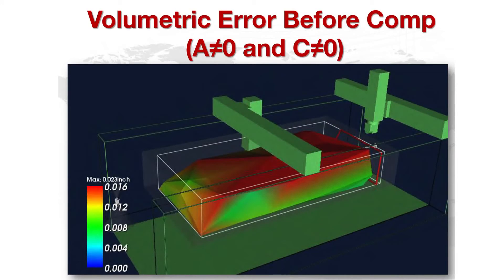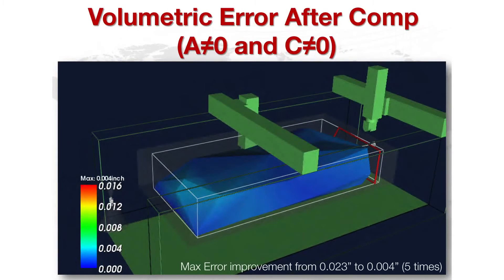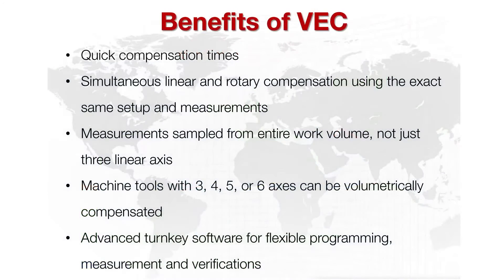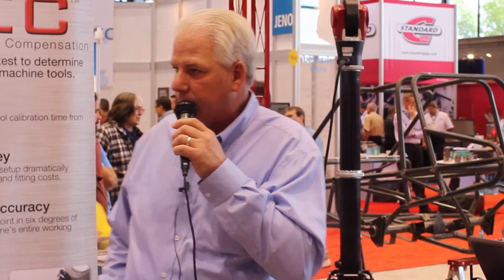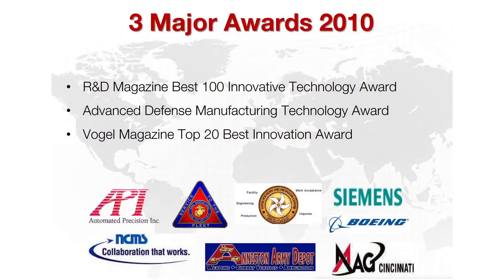Here we show a 3D error map of errors on a machine showing a 23-thousandths max error before calibration, reduced to 4 thousandths after calibration. Benefits of VEC include quick compensation times; we can simultaneously measure the rotaries and linears at the same time across up to six axes. We have a full turnkey software solution for generating programs and implementing compensation. API was awarded three awards in 2010 for VEC: the R&D Magazine Best 100 Innovative Technology Award, Advanced Defense Manufacturing Technology Award, and the Fogel Magazine Top 20 Best Innovations Award.